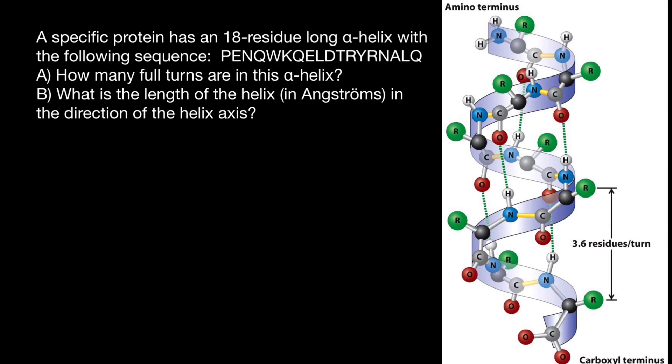And the first one, so here's the alpha helix. In order to answer the first question, all you have to know that per one turn, there are 3.6 residues or amino acids. According to our problem, the polypeptide chain consists of 18 amino acids.